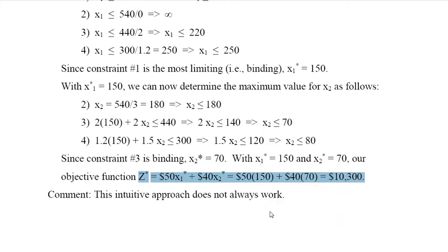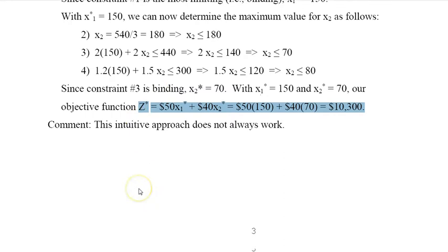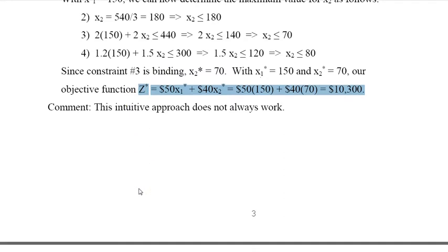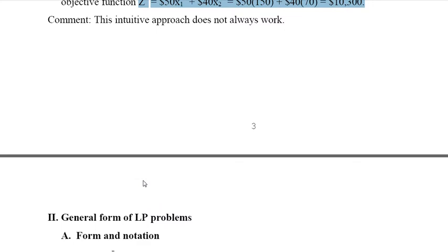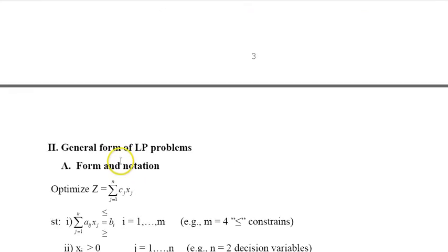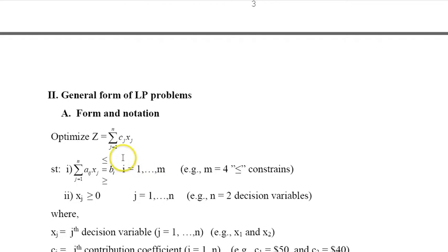But the issue here is this intuitive approach doesn't always work. If you think of three or four or five decision variables, like five different snowmobile models with all the restrictions I can put in, this method will not always work. So before we proceed with other methods, we're going to say now we have a model, we know how to solve it. So how do we get a general formulation for this model?